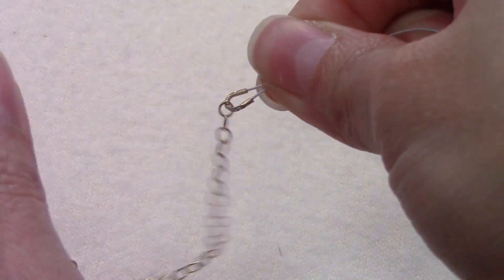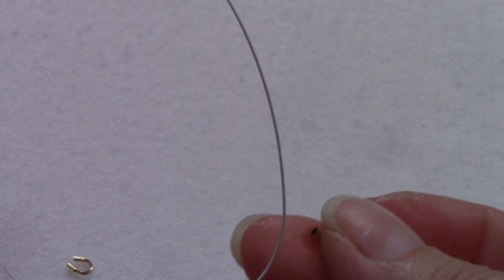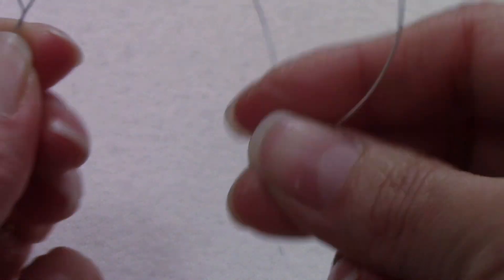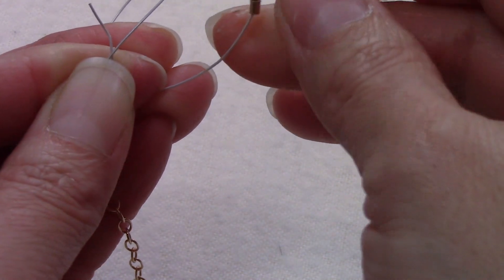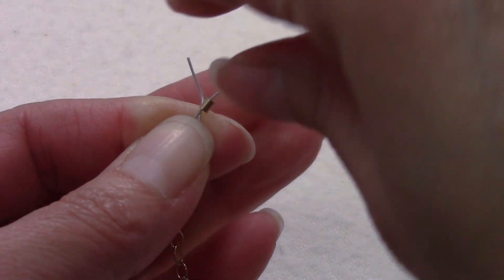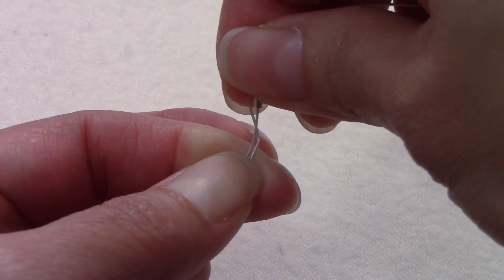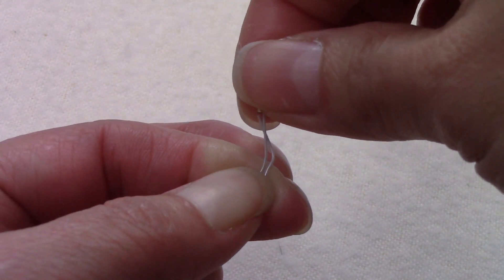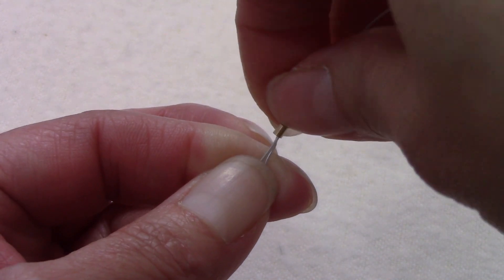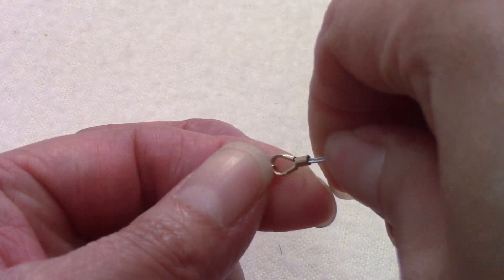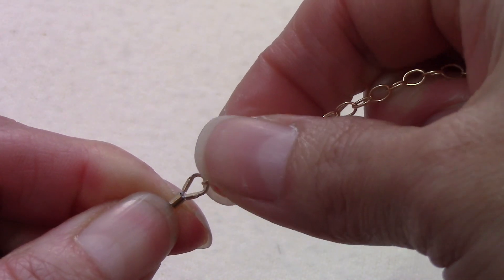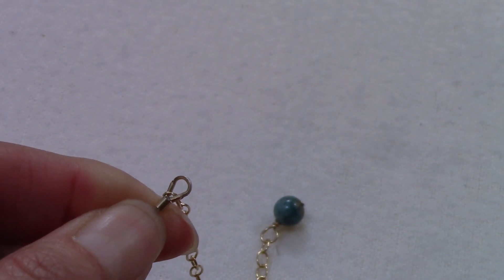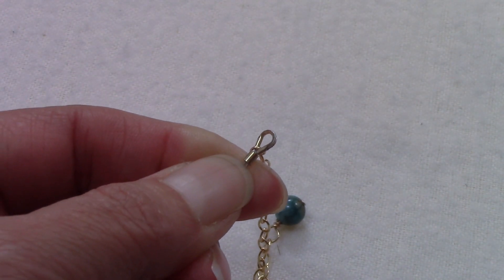This is what you are going to have. So you are going to grab your crimp bead and you want to pass it through both ends of the wire. I have the magic crimp pliers so whatever you have available that's what you are going to use. Go ahead and crimp your bead.